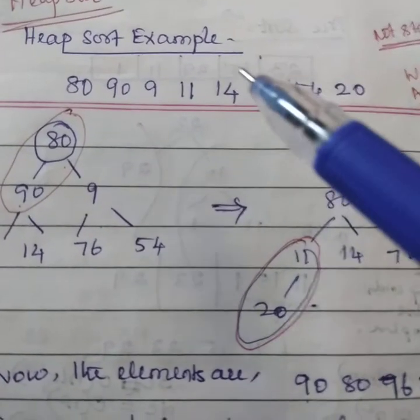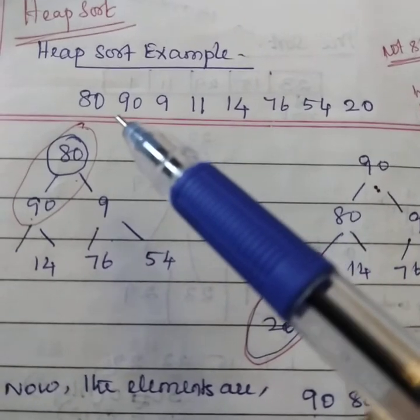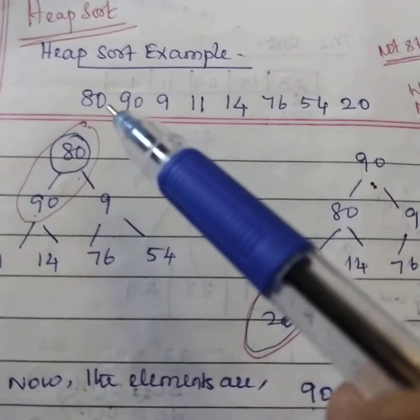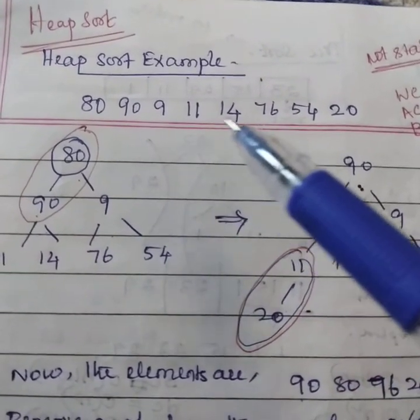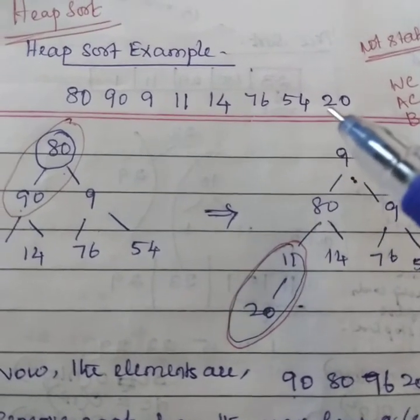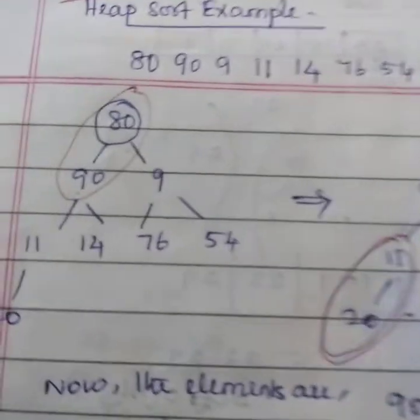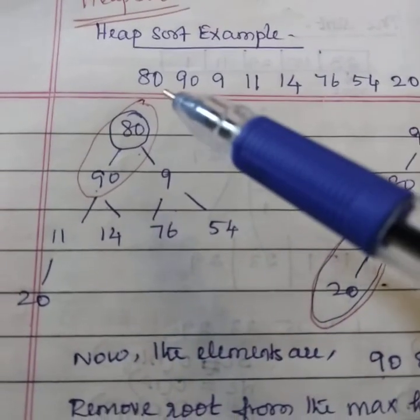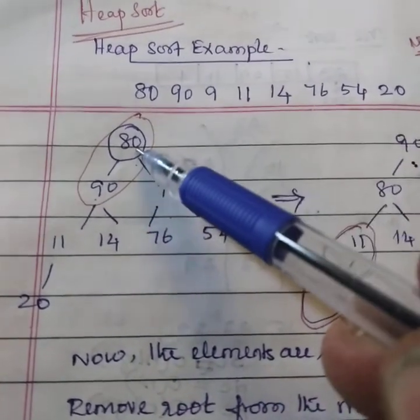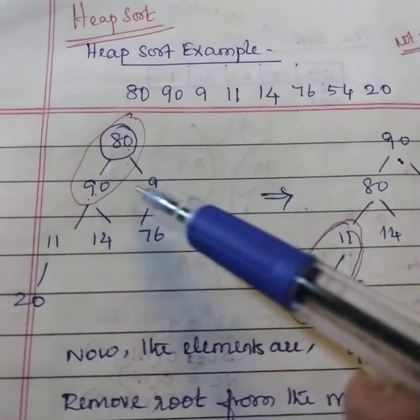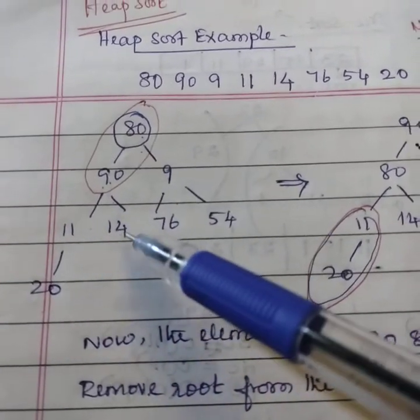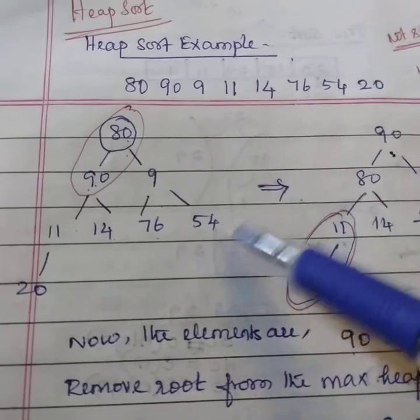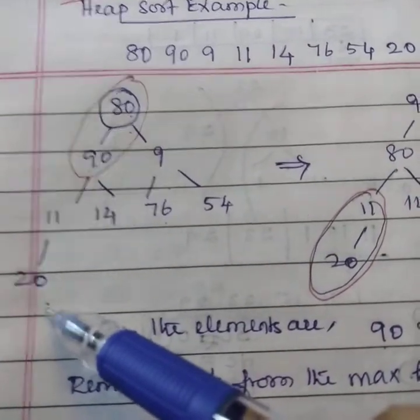Now, let's see an example. Here, the list of elements that is 80, 90, 9, 11, 14, 76, 50, 54 and 20 are given. First, we need to draw a tree for this. 80, take 80 as a root. Then 90, 9, 11, 14, 76, 54 and last 20.